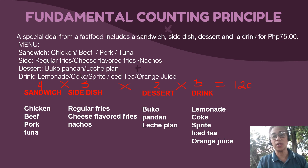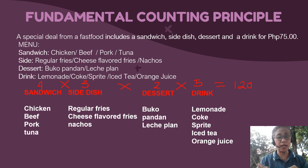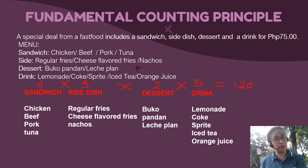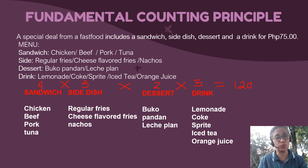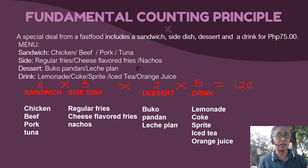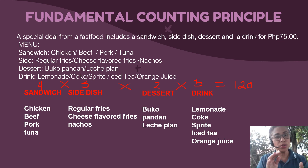So imagine if you were going to list all of those or make a tree diagram — it would take so much time because you'd have to come up with 120 ways to order that special deal. That is why it is not always beneficial to do listing or a tree diagram, but rather we can use the shortcut of the Fundamental Counting Principle.